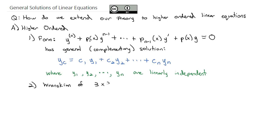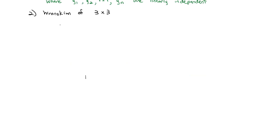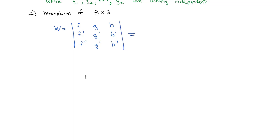We're going to look at a 3×3 Wronskian where we're dealing with third derivatives. The Wronskian of a 3×3 is still going to be a determinant, but because we have three functions — f, g, and h — we're going to need two additional rows: one for f prime, g prime, and h prime, and another row for f double prime, g double prime, and h double prime. That Wronskian is not equal to zero if and only if f, g, and h are linearly independent.